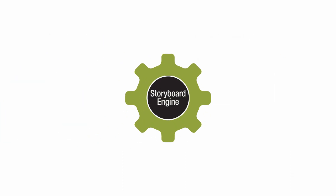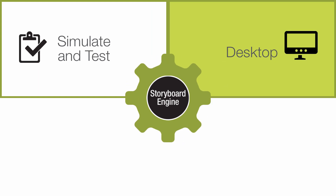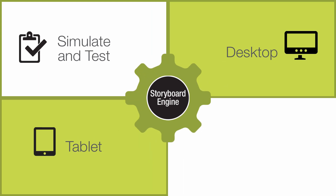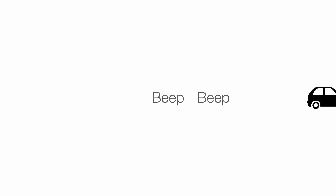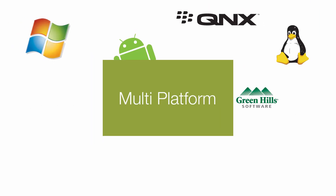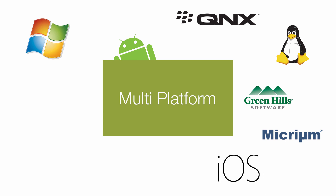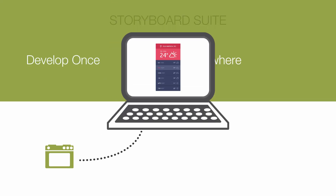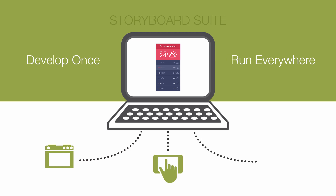Storyboard Engine enables users to simulate their application and start testing on their desktop, a tablet, or even on an embedded device like the touchscreen in a car. With multi-platform support, Storyboard has an embedded engine that's optimized for each CPU, OS, and rendering combination, so an application can be developed once and run on different platforms with optimized performance.